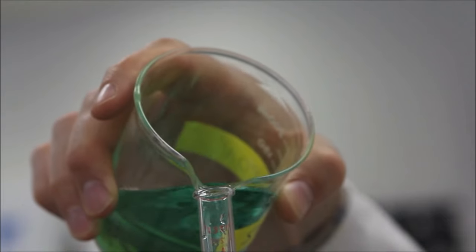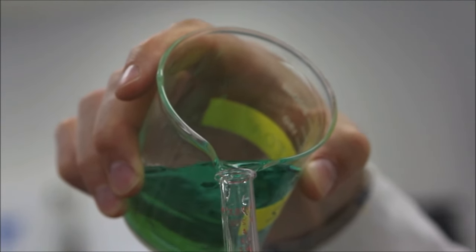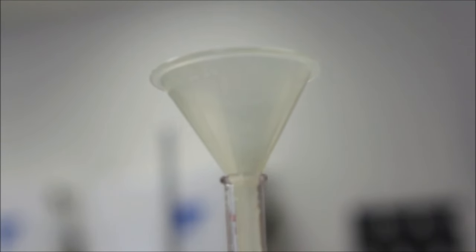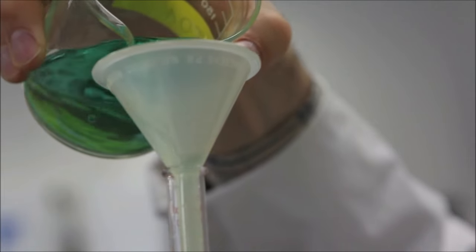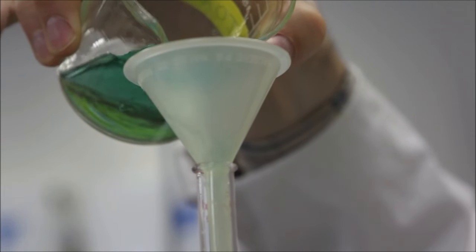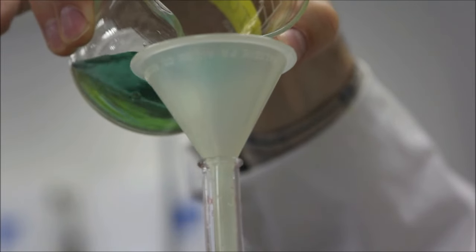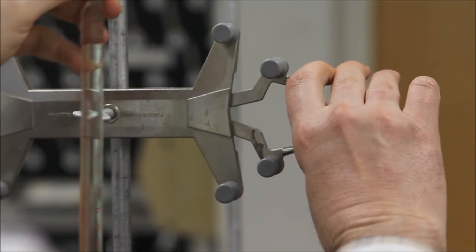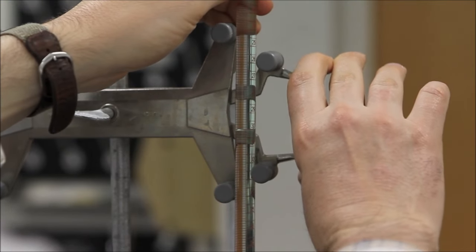To fill the burette, you may choose to either pour your solution from your small container into the top of the barrel. Alternatively, you may decide to use a small funnel inserted into the top of the barrel to make this process a lot easier and certainly a lot less error prone. Either approach is perfectly okay, but if you decide to use the funnel, please remember to remove it before continuing. Once it is filled, secure the burette in the upright position using the burette clamp.